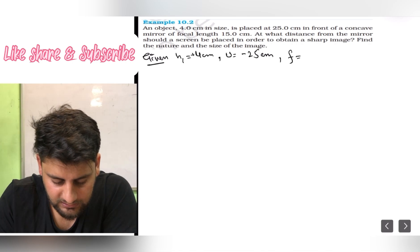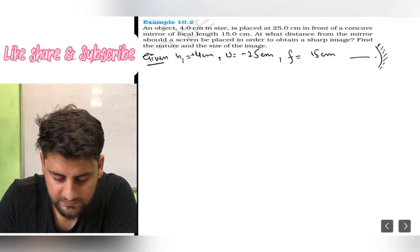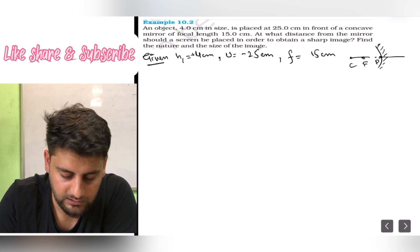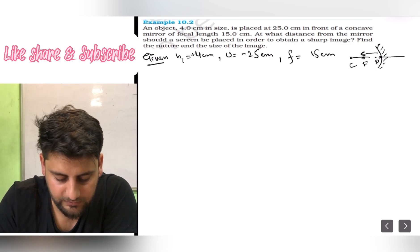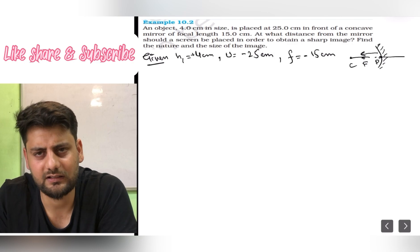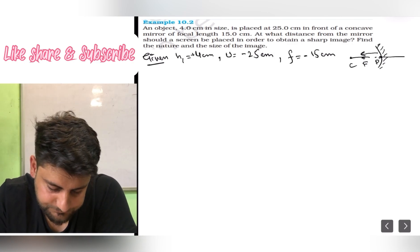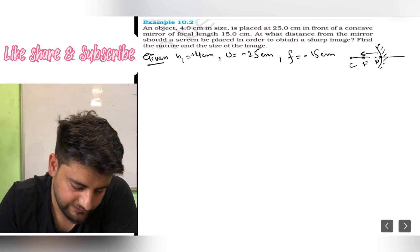Focal length is 15 centimeter given. Now keep in mind, if this is our concave mirror, suppose I make a little diagram so you can understand. Pole is here, here is focal length, here is center of curvature, principal pole. You can see it lies on the negative x-axis. So this means focal length is negative. This distance is negative because it lies on the negative x-axis.